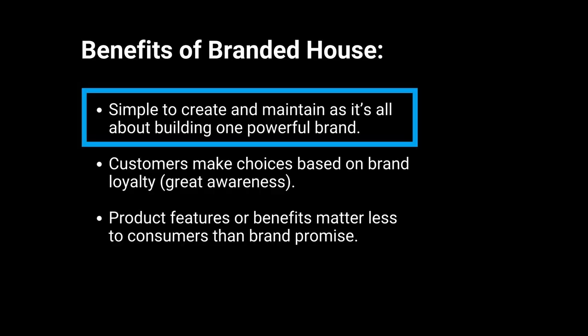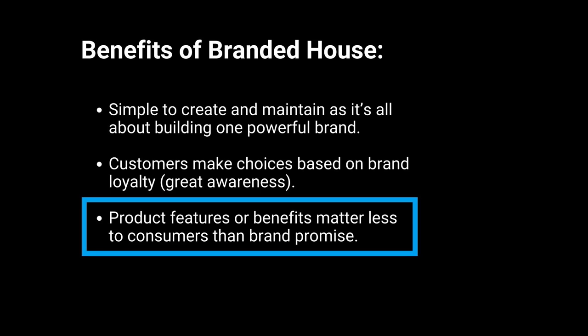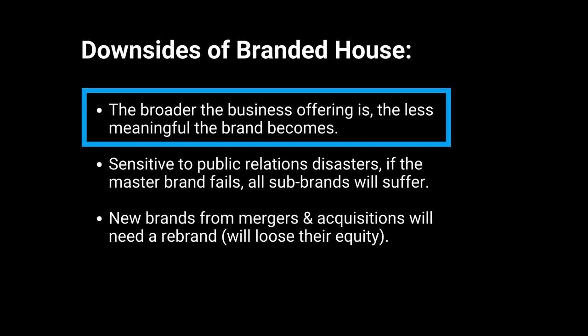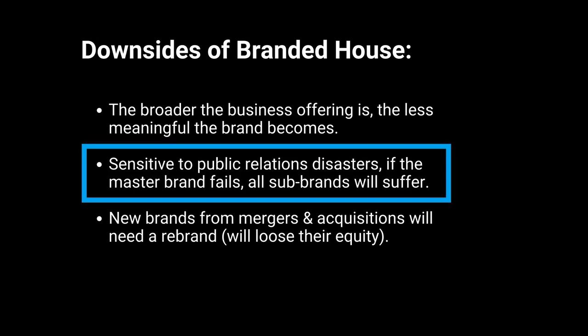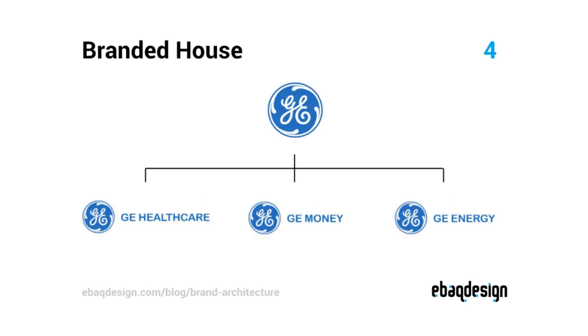However, the branded house model won't work for every company — some will benefit more than others. Benefits of using the branded house architecture: first, it's simple to create and maintain; it's all about creating one powerful brand and customers can make choices based on brand loyalty — product features and benefits matter less than brand promise. Some downsides would be that the broader the business offering, the less meaningful the brand becomes; it's also sensitive to PR disasters because if the master brand fails, all sub-brands will suffer as well; and new brands from mergers and acquisitions will need to be rebranded and lose their equity. Examples of branded house architecture include FedEx, Apple, Samsung, General Electric, and Smithsonian.